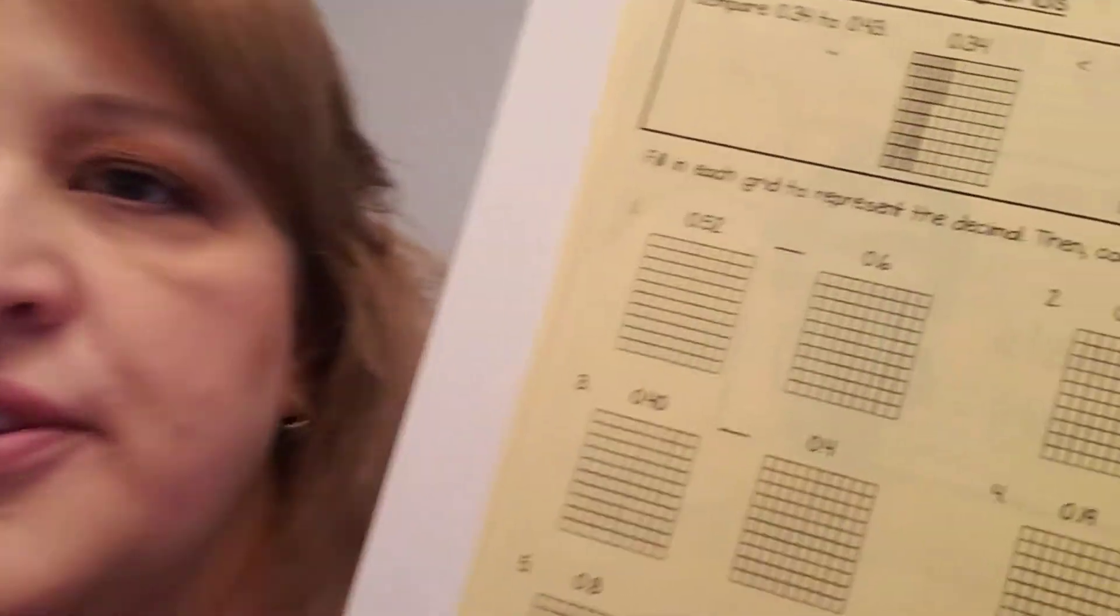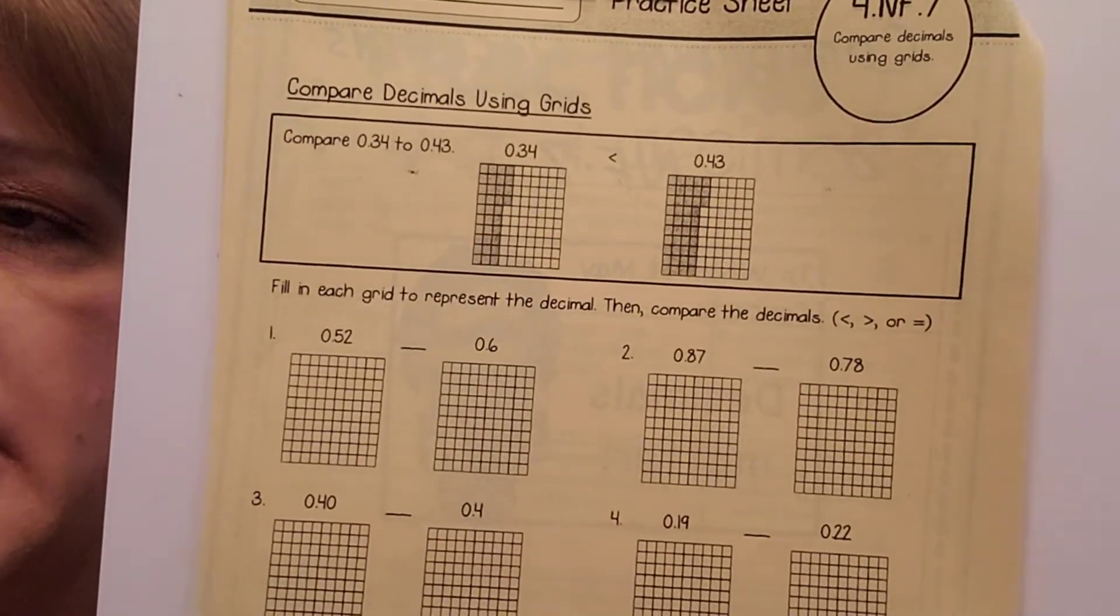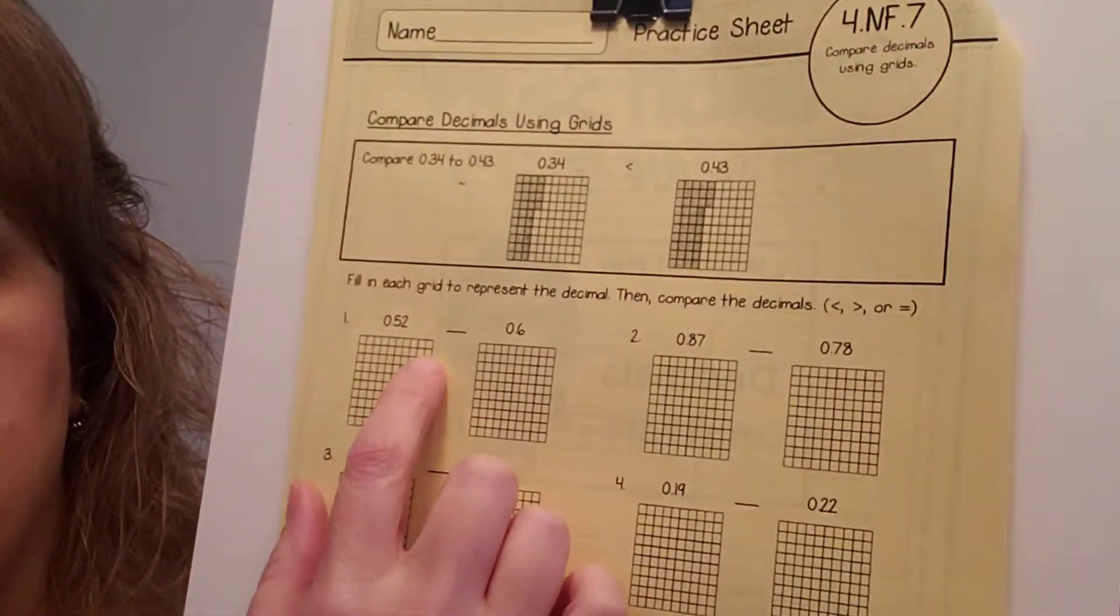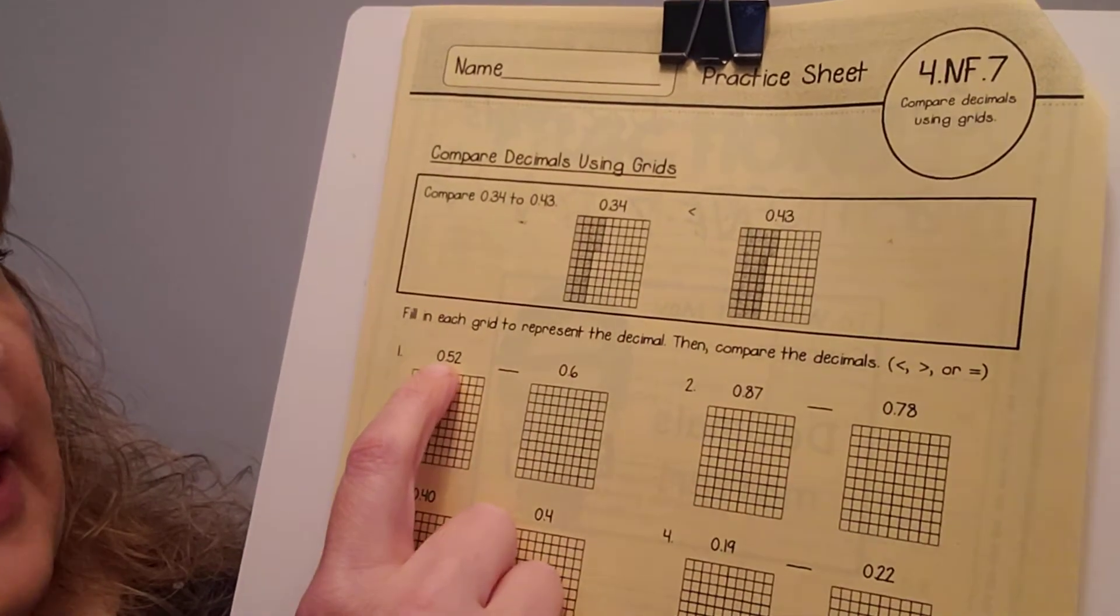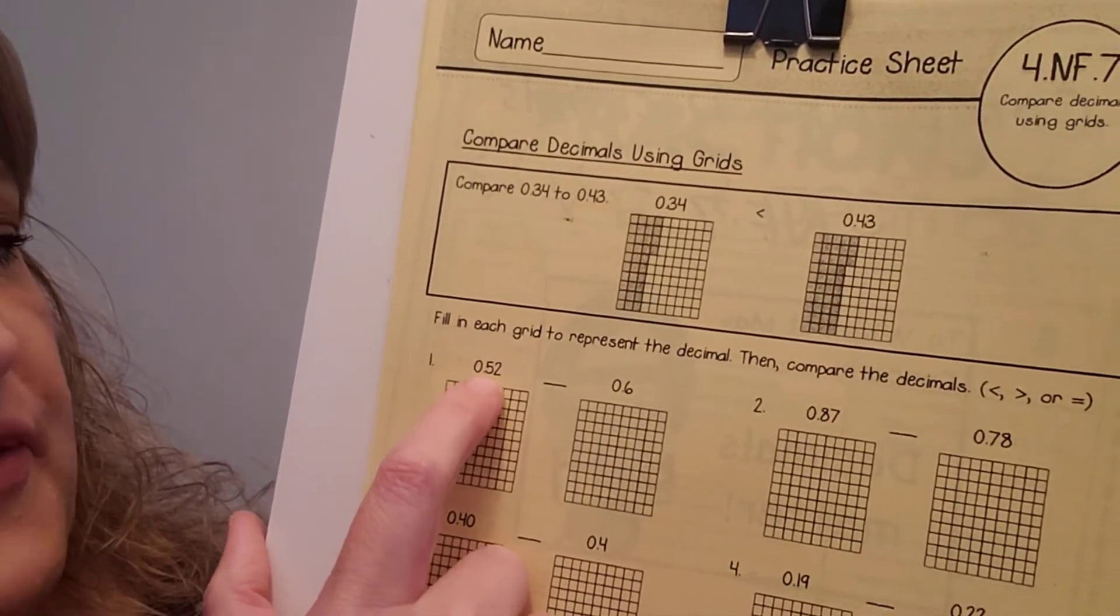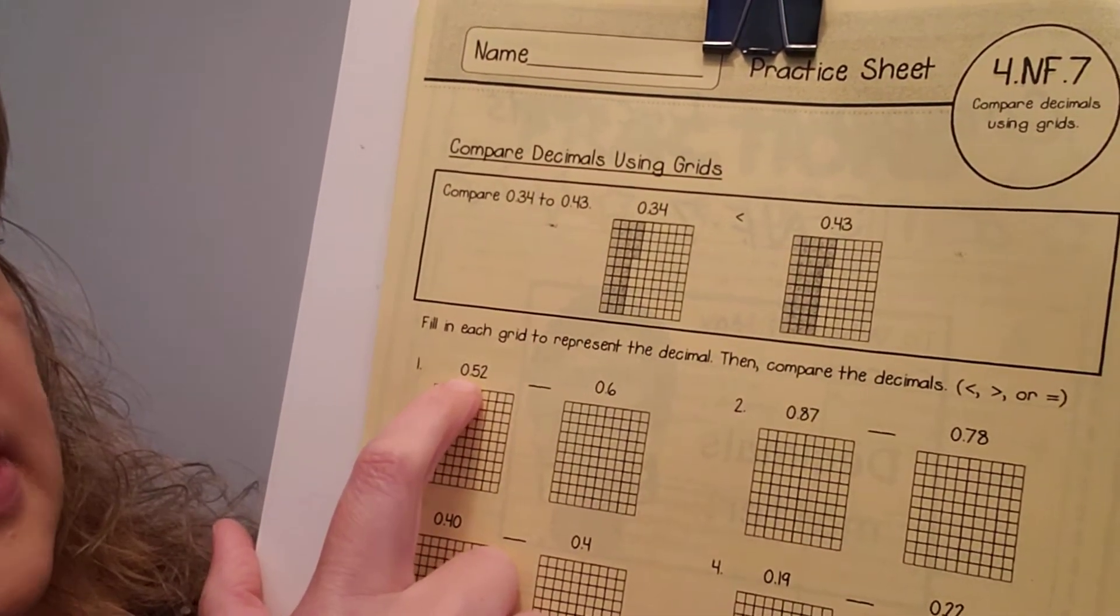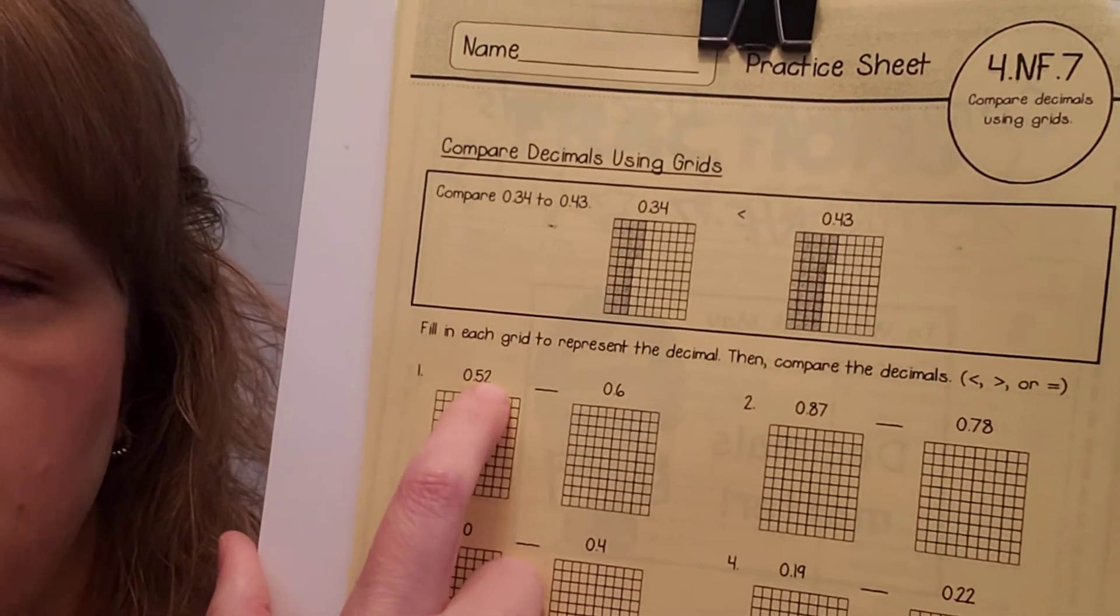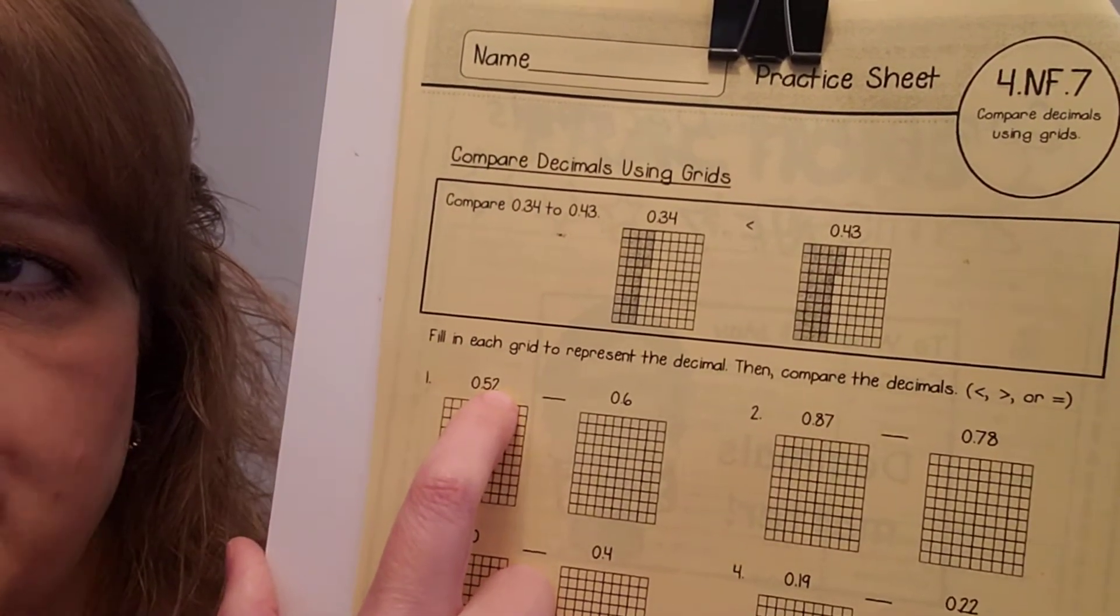All right, so the first thing that we're going to do is talk about where zeros can go on decimals. We've talked a little bit about this on comparing fractions or decimals, but if you get a decimal here, and we see that we have 52 hundredths, zero whole numbers, and then we have a decimal and then a 52. Do you notice how there are two decimal places after the decimal?